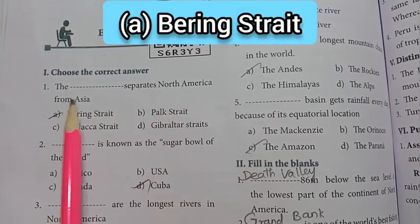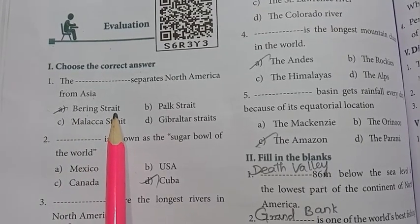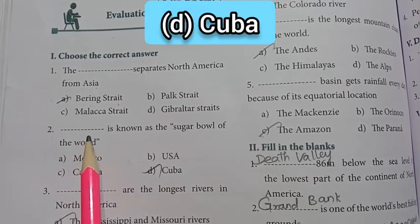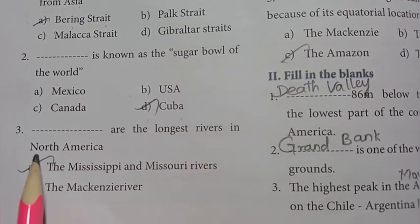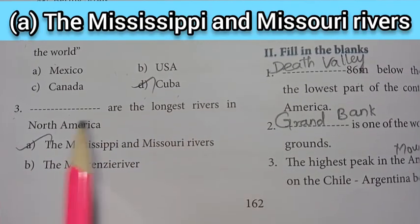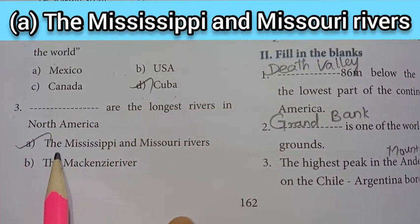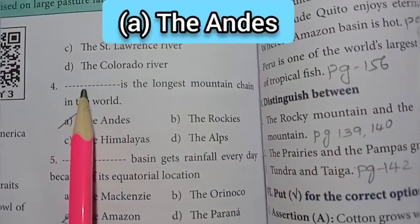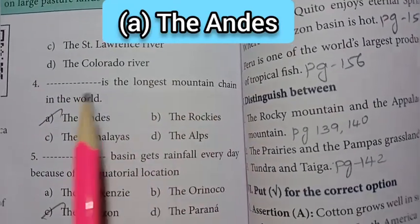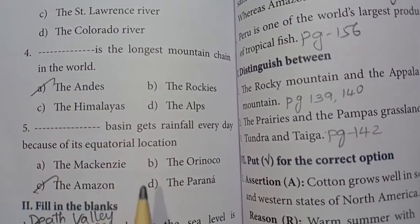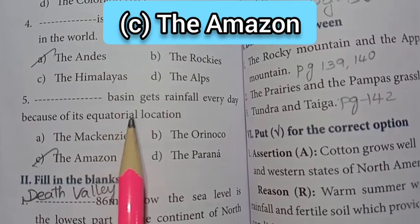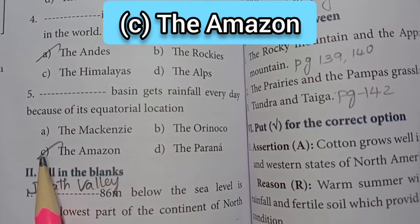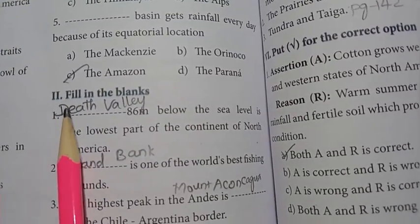Section 1: Choose the correct answer. First one — dash separates North America from Asia. The answer is A: Bering Strait. Second one — dash is known as the sugar bowl of the world. The answer is D: Cuba. Third one — dash are the longest rivers in North America. The answer is A: the Mississippi and Missouri rivers. Fourth question — dash is the longest mountain chain in the world. The answer is A: the Andes. Fifth one — dash basin gets rainfall every day because of its equatorial location. The answer is C: the Amazon.